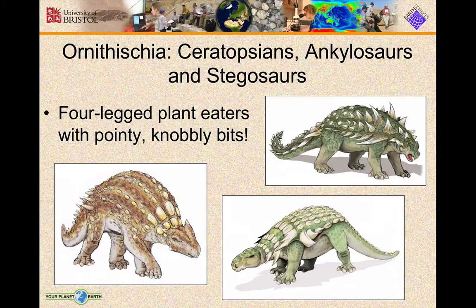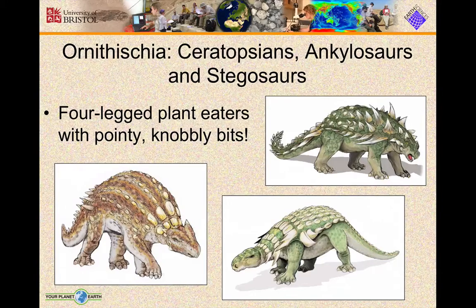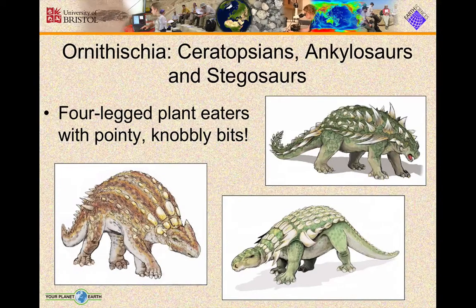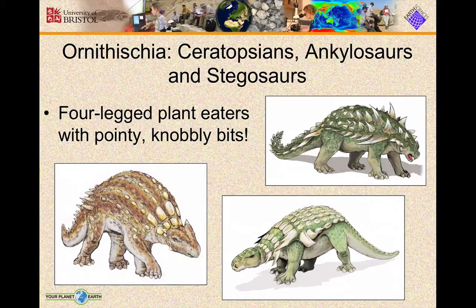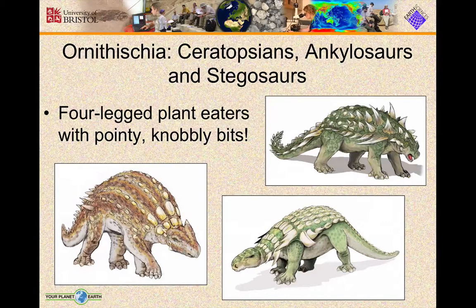The ornithischians also include some of our most renowned dinosaurs. The ceratopsians — the triceratops — with the large frill and horns around its head used for display. We also have the ankylosaurs, the armoured dinosaurs, which look fairly ferocious but were actually plant-eaters who evolved this incredible set of adaptations to protect themselves against predators. Even their eyelids were bony.